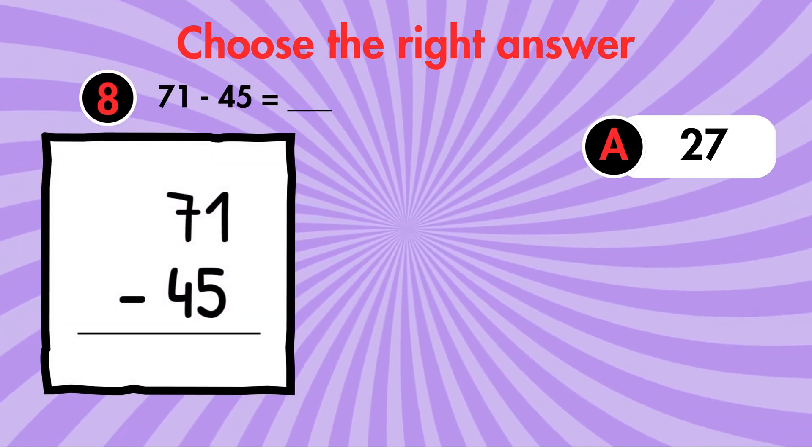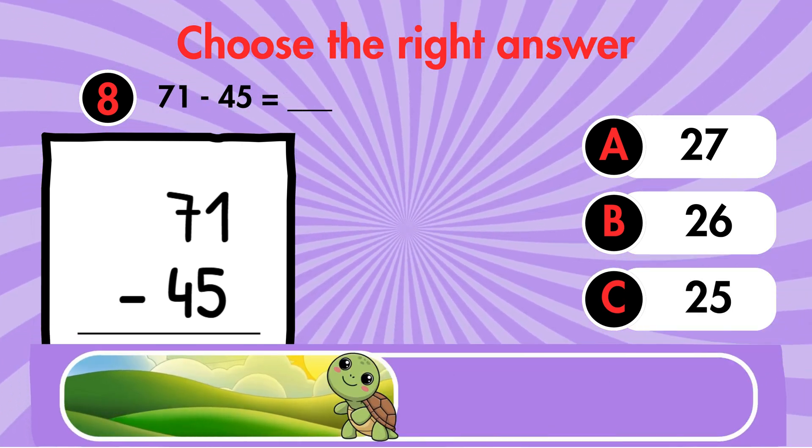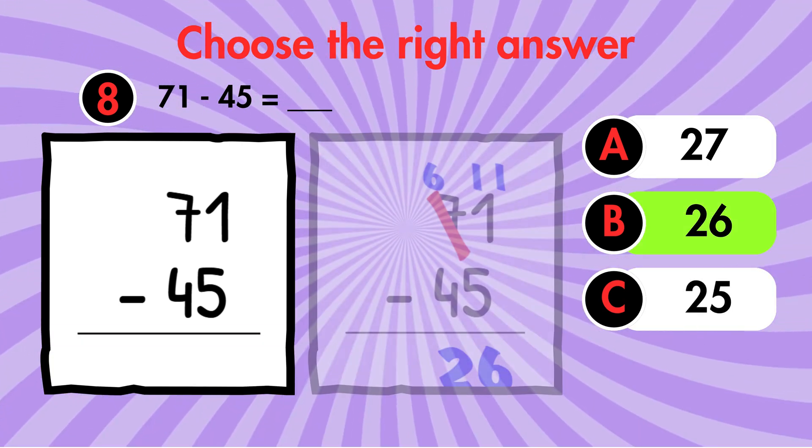Question 8. 71 minus 45 equals what? Answer 26.